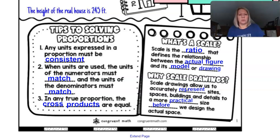And then in any true proportion, the cross products, diagonal being multiplied, anything on the diagonals that's multiplied has to be consistent and match. So the cross products have to be equal. And then one last thing to point out on this sheet here is when we're talking about scales and scale factor, a scale is a ratio that's used to define the relationship between the actual figure and the drawing or between the actual figure and the model. Scale drawings allow us to accurately represent sites, spaces, buildings, and details to a more practical size before we begin to design the actual space.